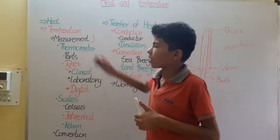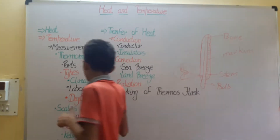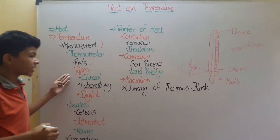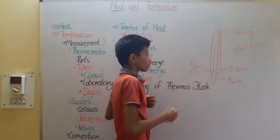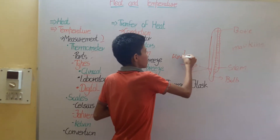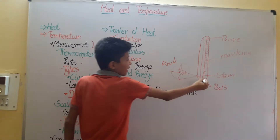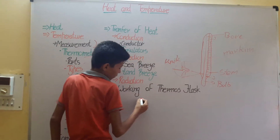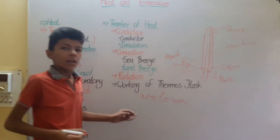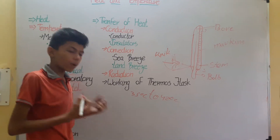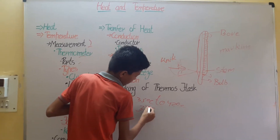Then we have the types of thermometers. Thermometers are divided into two types: clinical thermometers and laboratory thermometers. Clinical thermometers have a constriction. The markings on clinical thermometers range from 35 degrees Celsius to 42 degrees Celsius. The average temperature of the human body is about 37.5 degrees Celsius.